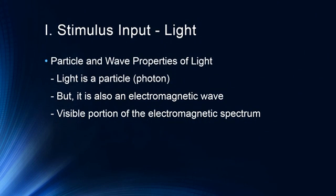Light is a bit of an unusual physical manifestation in that it is both a particle — photons emitted by a light source — traveling in an electromagnetic wave. So light has this unusual quantum property in which photons are actually captured by cells in the retina, which causes a change in the protein structure of those cells. But light also travels in an electromagnetic wave, and that wave property is part of what results in our perception of color.